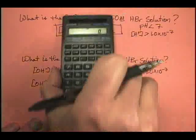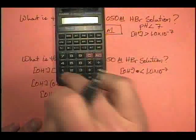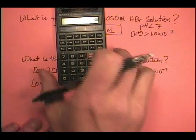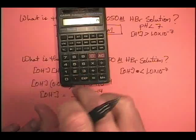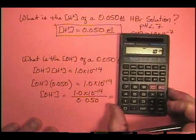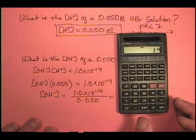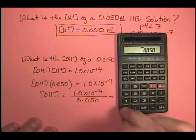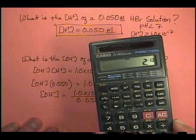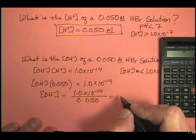And what does that equal? Well, let's check it. 1.0 exp minus 14th, divided by 0.050, equals, what do we get? 2 times 10 to the negative 13th.